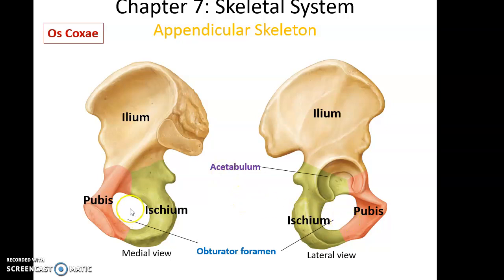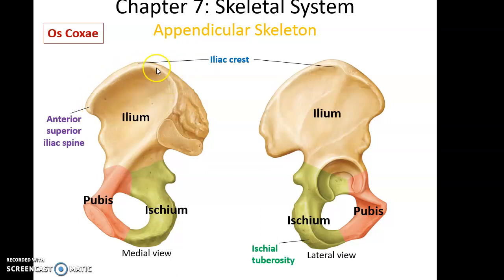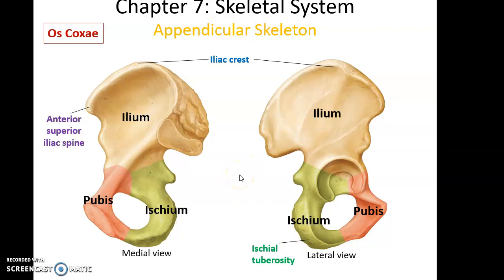When you look at the os coxae, we see this very large hole — that is the obturator foramen. One of the things that passes through it is the obturator muscle. Then we have this socket called the acetabulum — the socket of the os coxae. This long rough ridge at the top of the ilium is called the iliac crest. The point at the anterior end of the iliac crest is called the anterior superior iliac spine — anterior toward the front, superior toward the top, iliac because it's part of the ilium, spine because it sticks out. Down at the inferior end of the ischium, we see this large rough structure called the ischial tuberosity. That's actually where we usually sit on the hip bones.